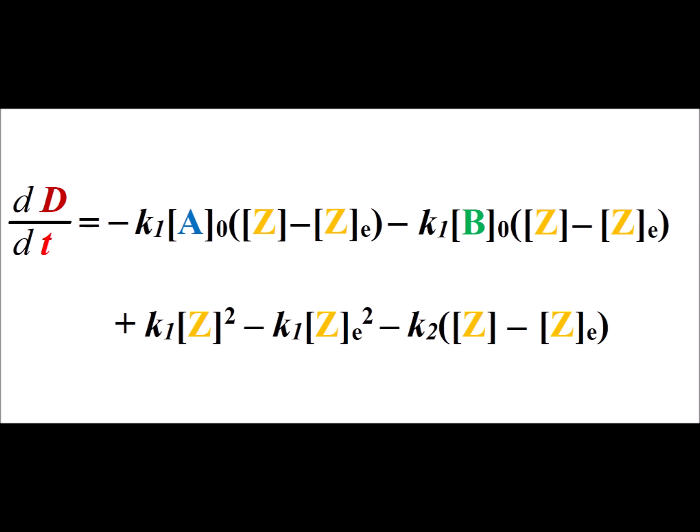Here we use the fact that zero is the identity element for addition. So if we add our expression for the change in z per unit time, which is the same as the change in big D per unit time, and then add our expression which is equal to zero — the value of the change in the concentration of z per unit time at equilibrium — we get the expression as shown on the slide.